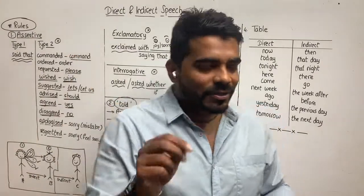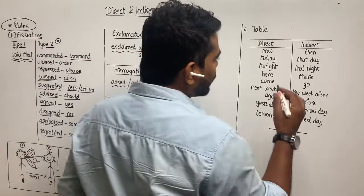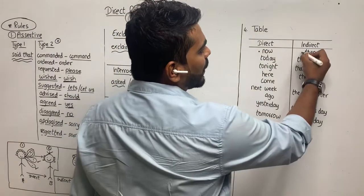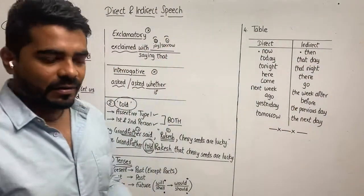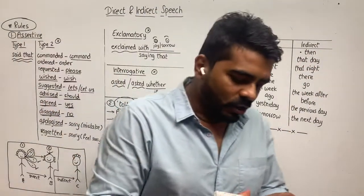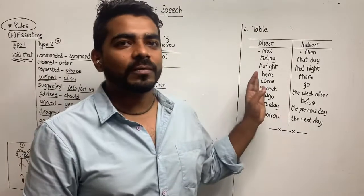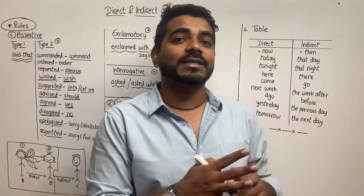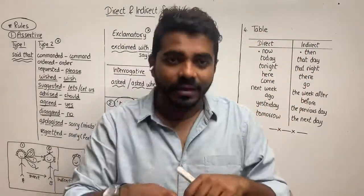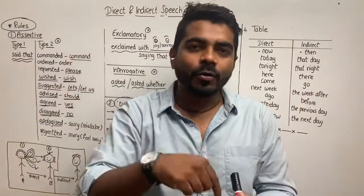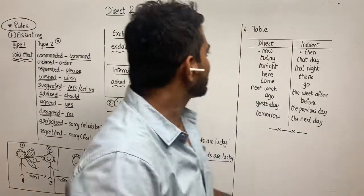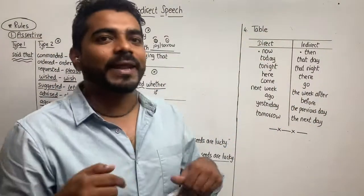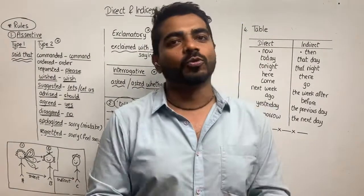Similarly, there are many words that change from direct to indirect speech. For example, 'now' becomes 'then' — 'You need to understand this now' becomes 'He said that we needed to understand it then.' 'Abhi' becomes 'tabhi.' Similarly, 'today' becomes 'that day' — for example, 'Today is very important for all the students.'